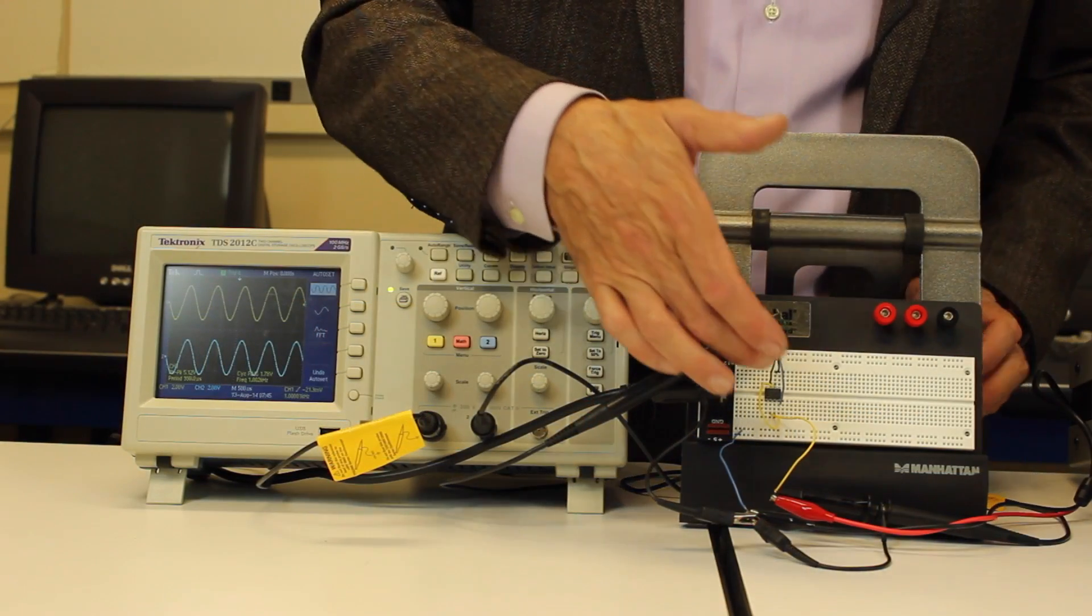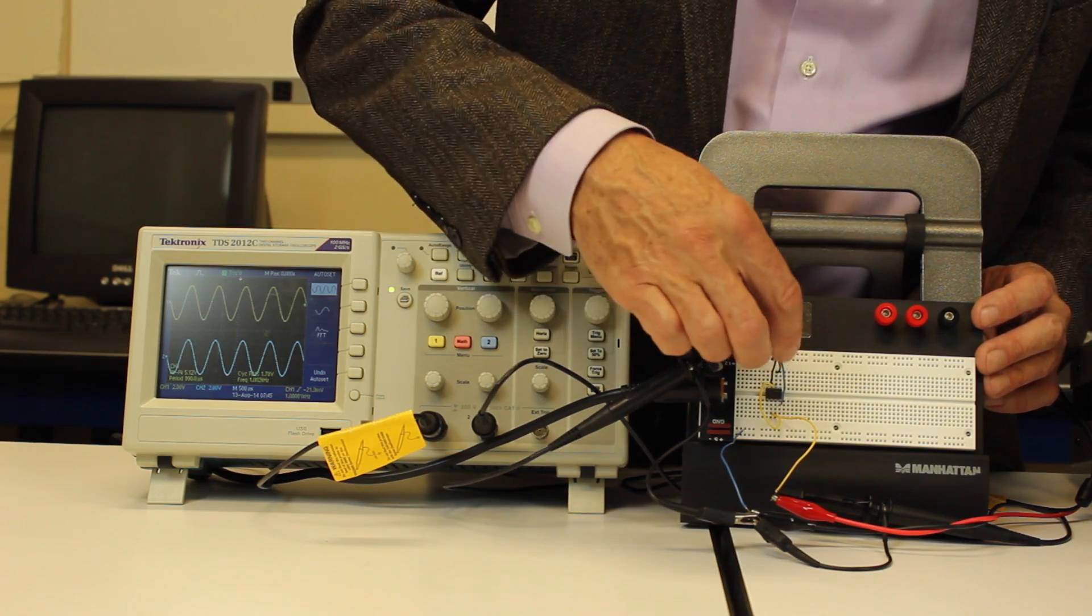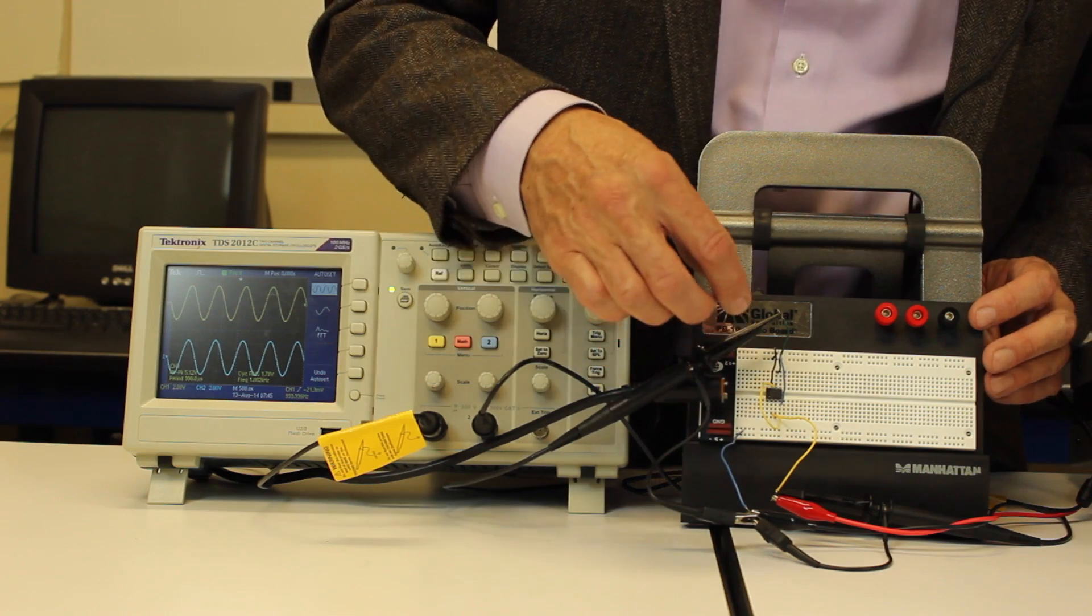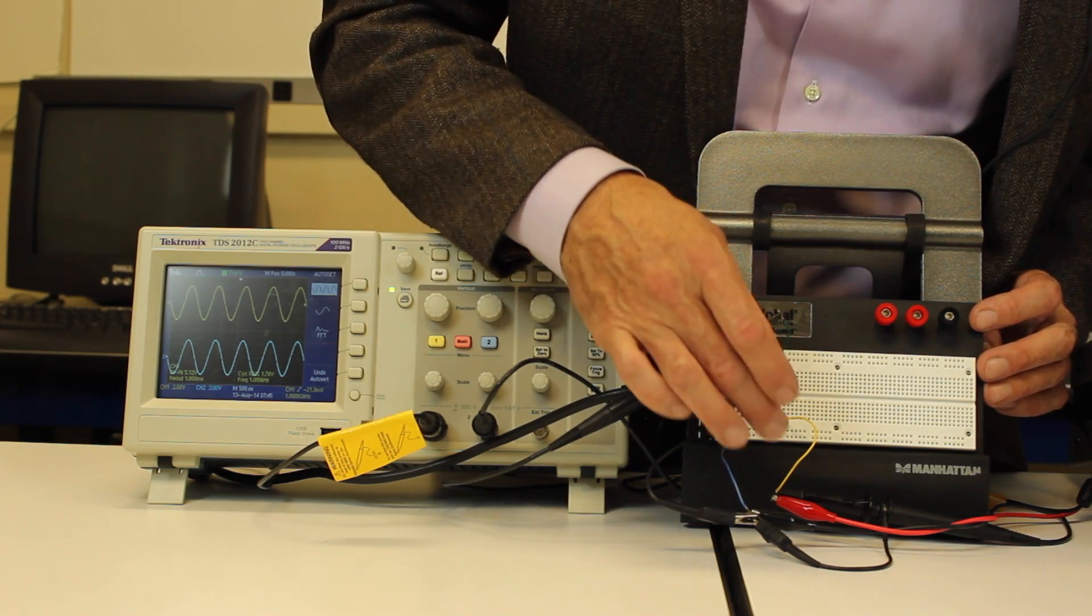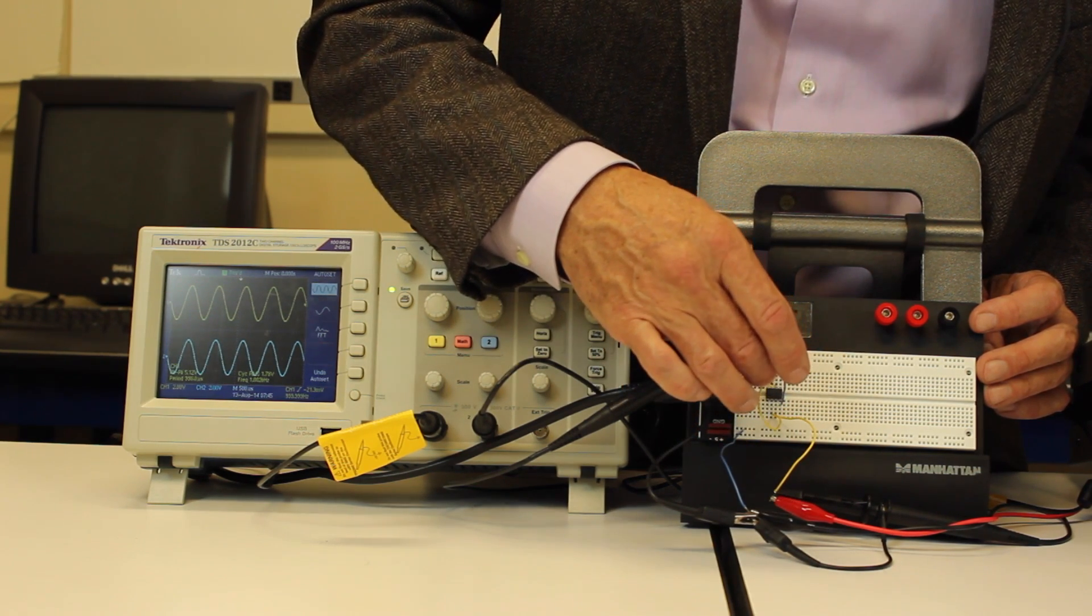So in this circuit, we have the op-amp set up in a follower mode. We have the plus 12 volts for VCC, the minus 12 volts to VEE. The input is coming in here, that's the non-inverting input. The inverting input is fed back, has a feedback from the output.